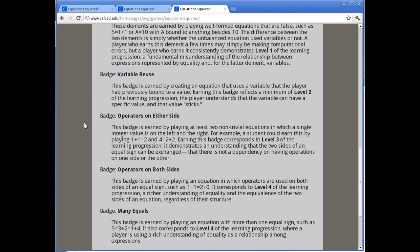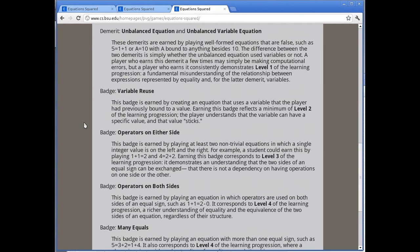The badges, on the other hand, correspond to higher levels of the progression. For example, the Variable Reuse badge is earned when you use a variable more than once, that is, in more than one equation. In order for a player to be able to do this, they must understand that both equations have to be satisfied, and so therefore the value sticks to the variable in this case. For complete details on the learning progressions and their relationship to demerits and badges, be sure to look at this For Educators section.